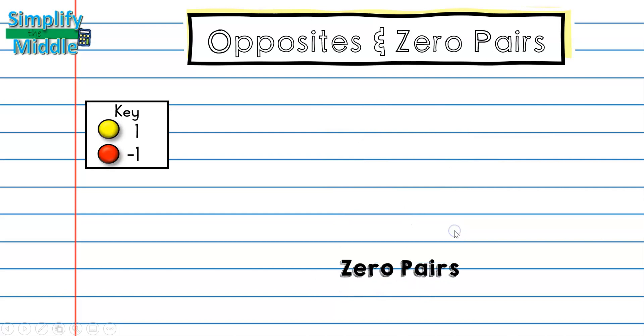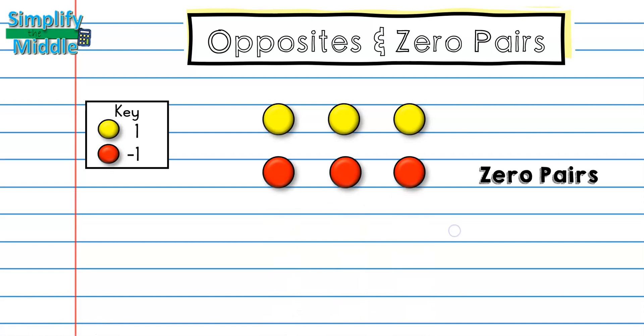Let's look at another example. Here I have three yellow counters and three red counters. So I essentially have positive 3 and negative 3. What I'm going to do for zero pairs here is group them by each set of zero. So here I have positive 1, negative 1 is 0. Same thing for my second set, and my third. So what this really means is if I add together positive 3 and negative 3, I get 0.